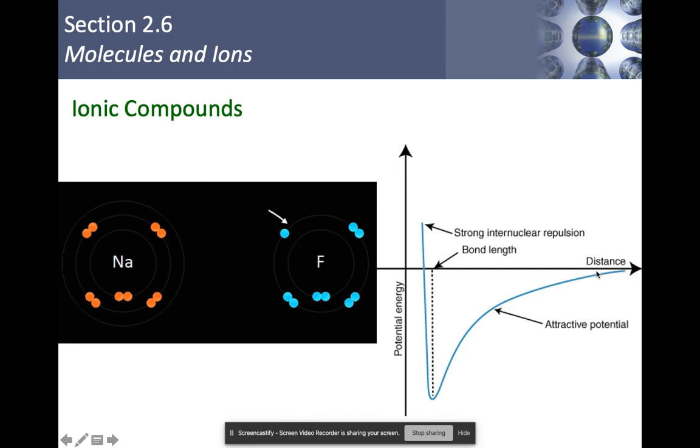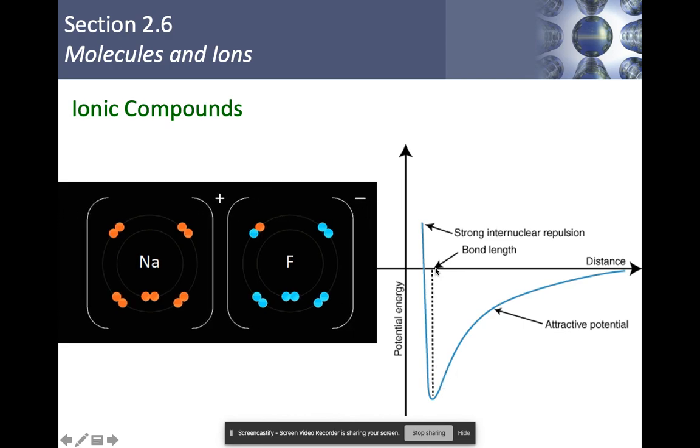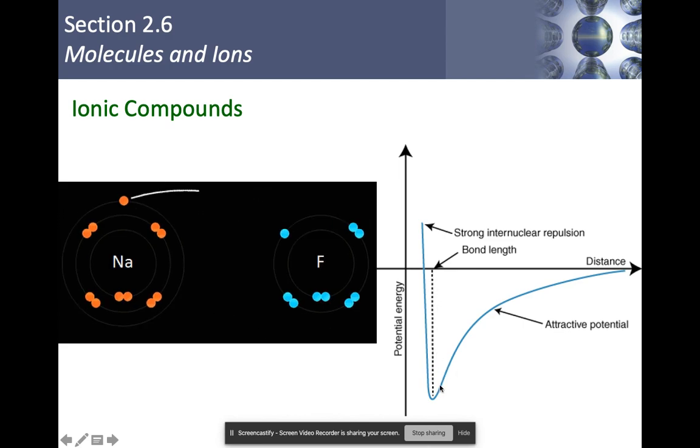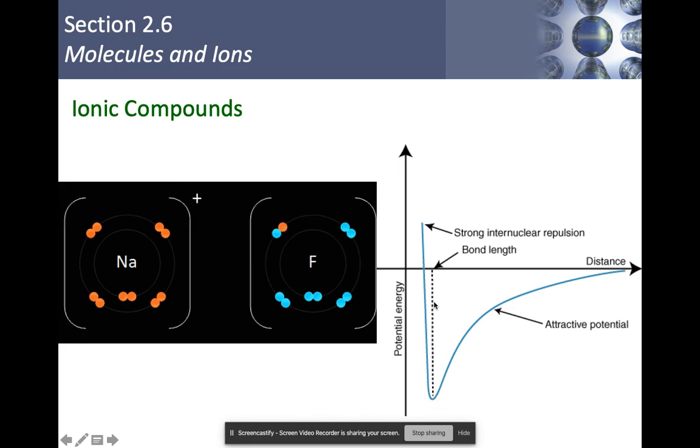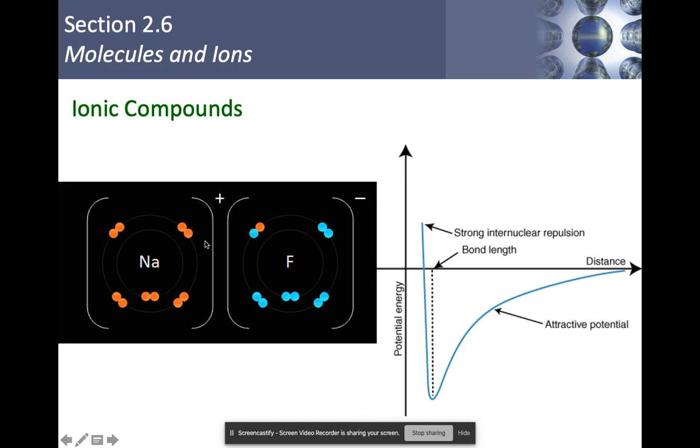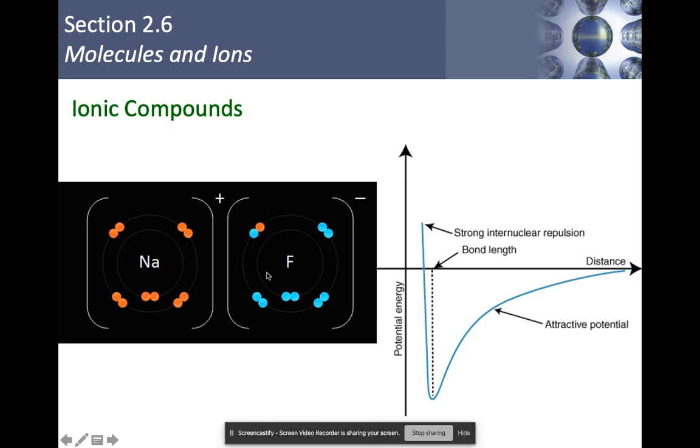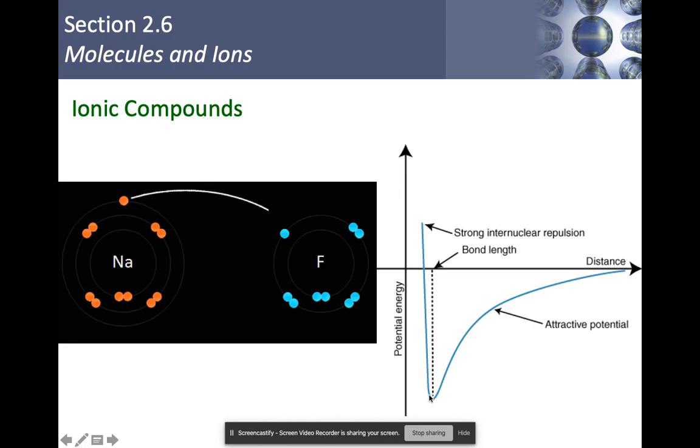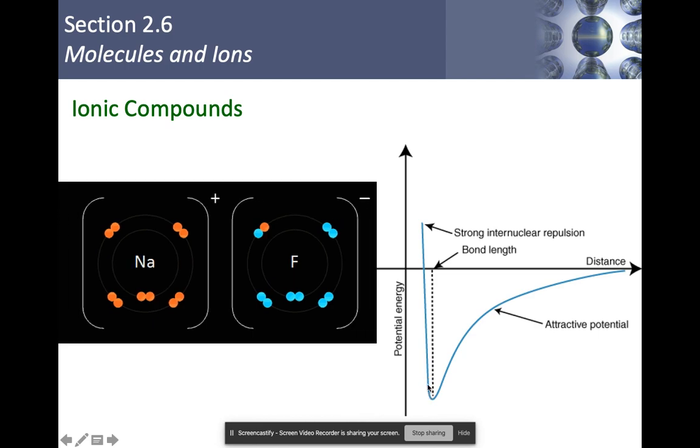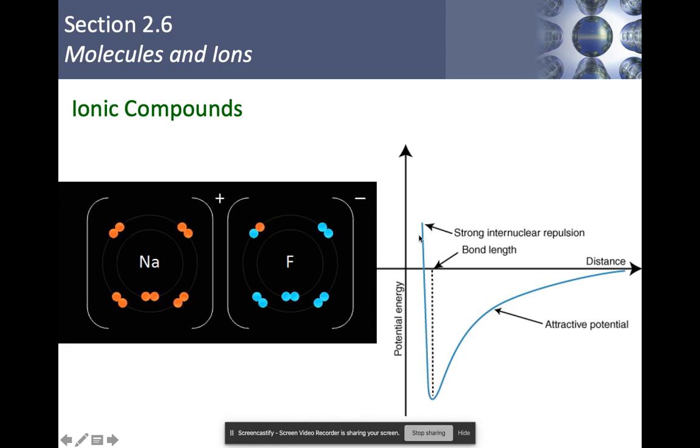So for ionic compounds, here I have my sodium, here I have a fluorine atom. You can see that the sodium is going to donate its electron. So now I have a sodium ion and I have a fluoride ion. Since I have an exchange of electrons, that means that I have an ionic bond forming between the two. The reason why they're sticking together is because positive and negative are attracted to each other. Notice the graph looks very similar. As they get closer, there's an attractive potential until they get close enough. Once they do that, we have the minimum amount of potential energy. If you push them closer and closer together, we have a stronger internuclear repulsion.